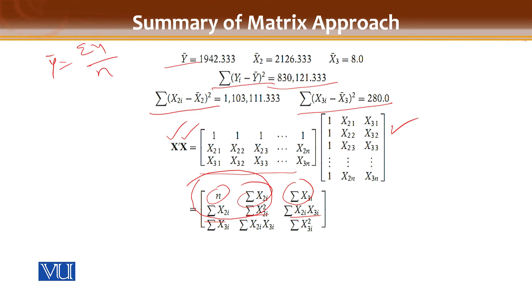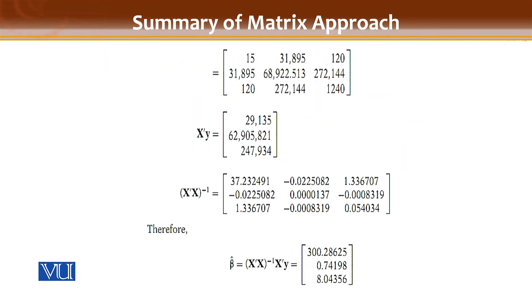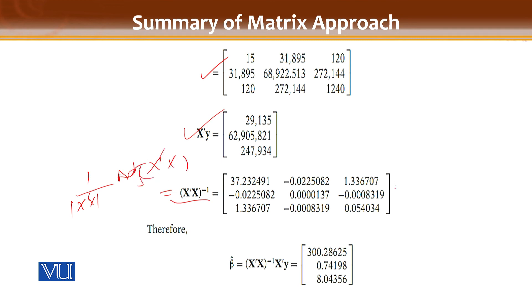In the three-variable case, X'X is a 3×3 matrix; in the four-variable case you expand it further. From the given data on independent and dependent variables, you find these values. You also compute X-transpose times y, getting the corresponding matrix. Then you find the inverse of X'X using the formula: (1 / determinant of X'X) times the adjoint of X'X.